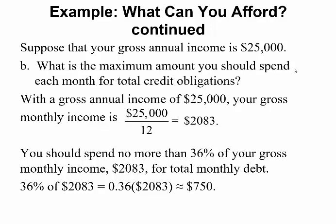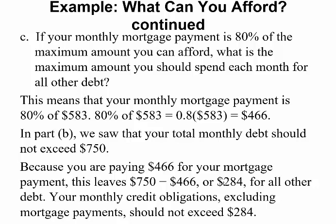What is the maximum amount you should spend on other obligations? Your monthly income is $2,083 and you should spend no more than 36% of your gross monthly income on monthly debt. So 36% of $2,083 is $750. If your monthly mortgage payment is 80% of the maximum amount you can afford — 80% of $583 is $466 — you're spending $466 on your mortgage payment. Since your total monthly debt should not exceed $750, and you're paying $466 for your mortgage, that leaves $284 for all other debt — car payments, student loans — your monthly credit obligations excluding mortgage should not exceed $284.